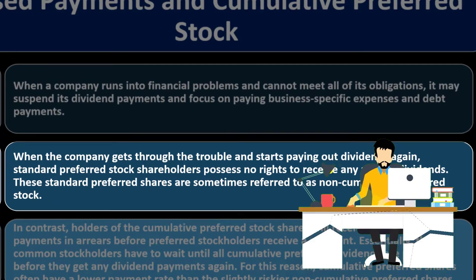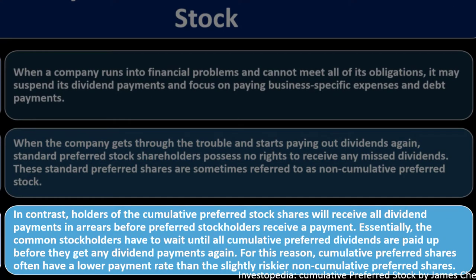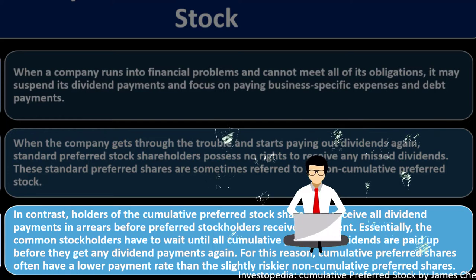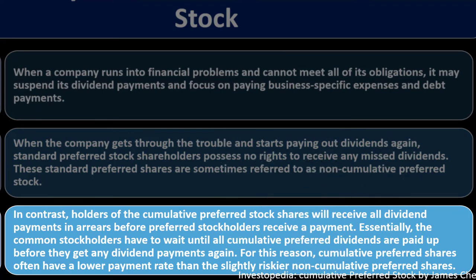In contrast, holders of cumulative preferred stock shares will receive all dividend payments in arrears before preferred stockholders receive any payments. If that provision is in place, the company must pay cumulative preferred shareholders before common stockholders. Since common stockholders vote for the board of directors, the company is motivated to pay them — but they must clear cumulative preferred dividends first. Common stockholders must wait until all cumulative preferred dividends are paid up. For this reason, cumulative preferred shares often have a lower payment rate than the slightly riskier non-cumulative preferred shares.